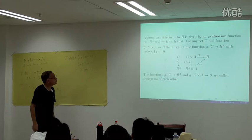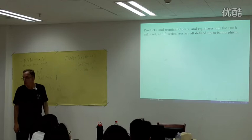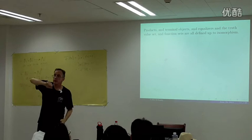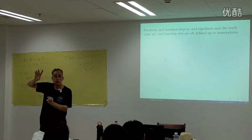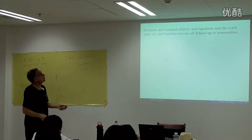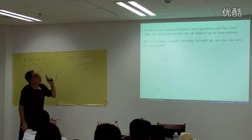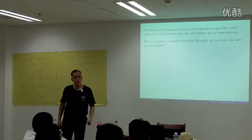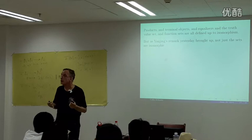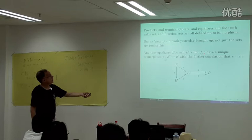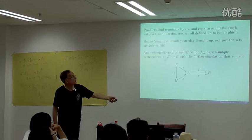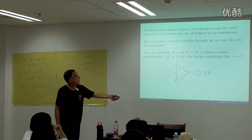All these constructions are defined only up to isomorphism. Given the inputs, there's a unique function, but the inputs themselves are not unique. Any two equalizers for the same two functions have a unique isomorphism between them that gets along with the inclusions — there's only one isomorphism making the relevant diagram commute.